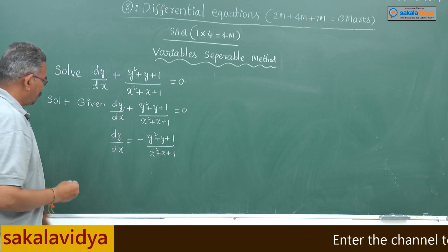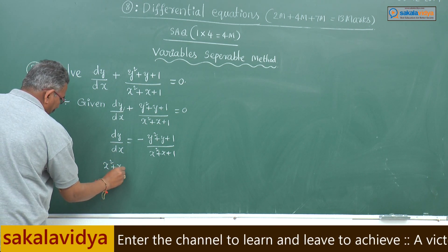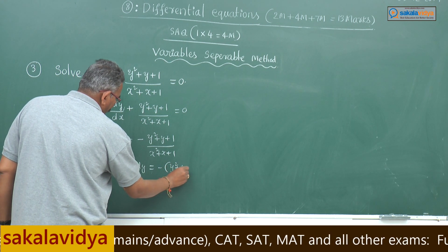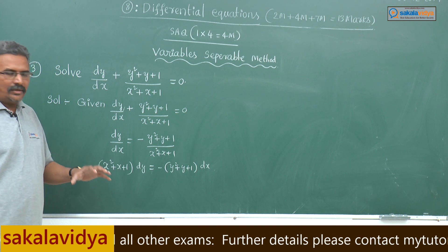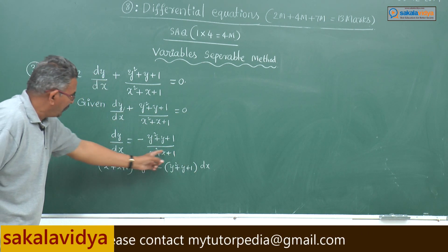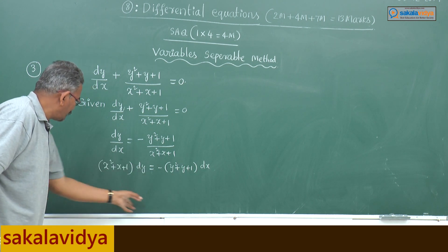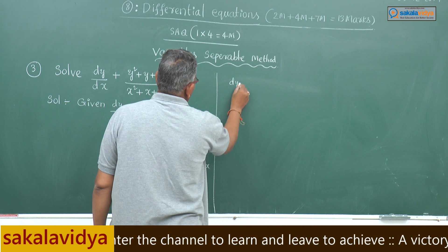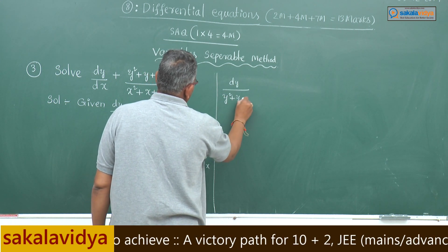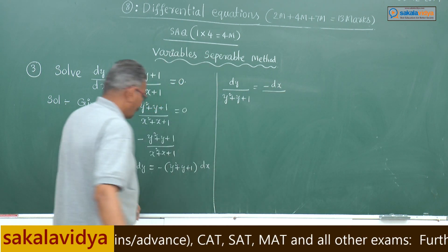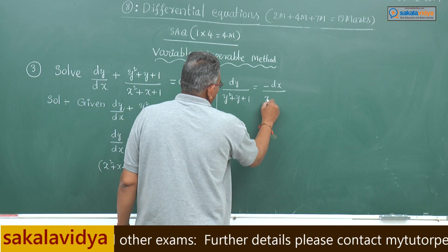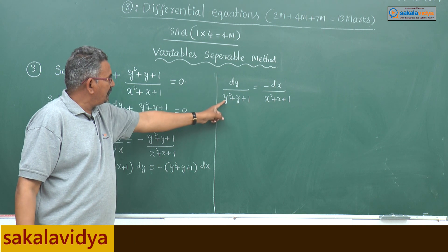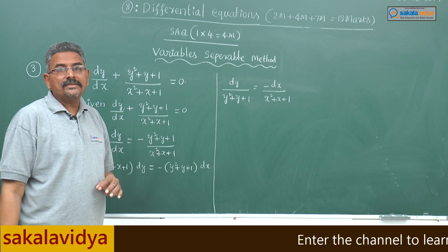Cross multiplying: (x² + x + 1) dy equals minus(y² + y + 1) dx. It is a function of y on one side and a function of x on the other, so transposing: dy/(y² + y + 1) equals minus dx/(x² + x + 1). This is in the form dy/(ay² + by + c) and dx/(ax² + bx + c), which means we use the integral formula for 1/(ax² + bx + c).